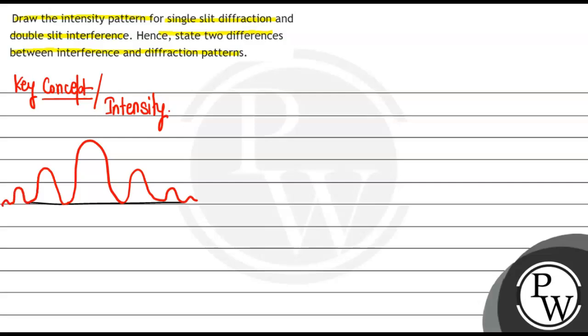If you notice, this is the zero position. This is lambda over d position, here it will be 2 lambda over d position. This will be minus lambda over d position, this will be minus 2 lambda over d position. This is the intensity curve for diffraction.